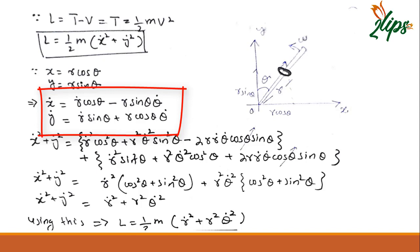Since I need to find X dot squared plus Y dot squared, I can square these two terms and then add them. When I square these two terms, I will get these terms.